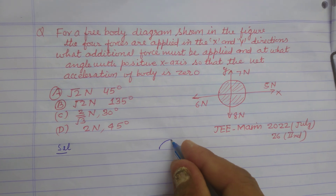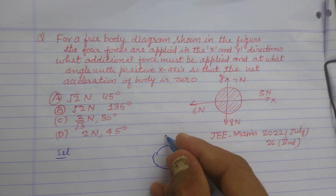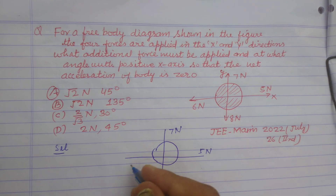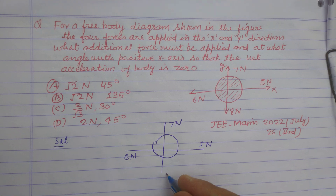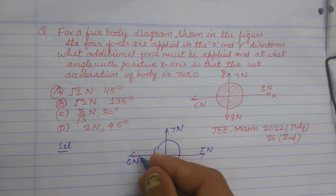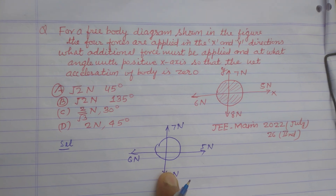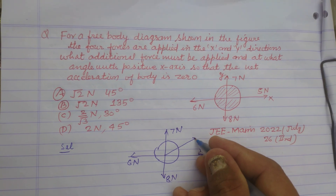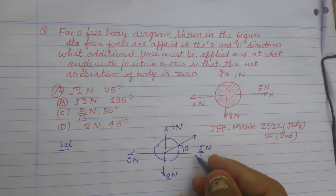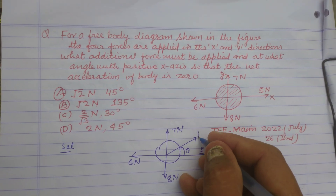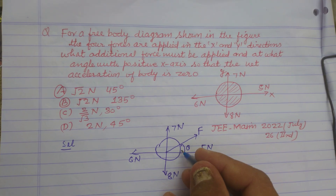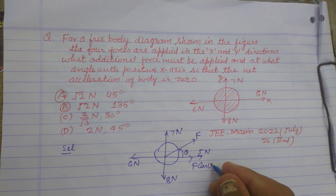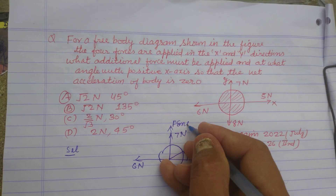First we resolve the given forces. Here forces are given: 5 newton, 7 newton, 6 newton, and 8 newton. For equilibrium, where acceleration is zero, we apply a force at an angle theta from the positive x axis — let this force be F. Resolving this force: in the x direction it is F cos theta, and in the y direction it is F sin theta.